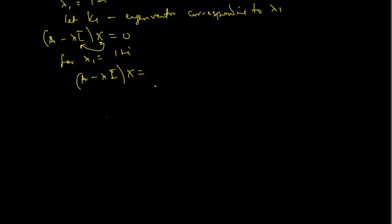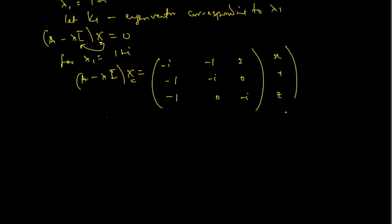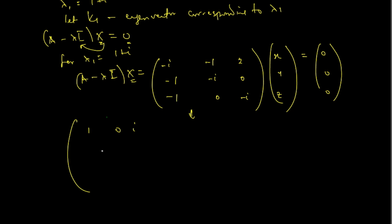Substituting lambda equals 1 plus i, the coefficient matrix becomes: negative i, negative 1, 2 in the first row; negative 1, negative i, 0 in the second row; and negative 1, 0, negative i in the third row. We have a system of linear equations, so we row reduce this coefficient matrix. After row reduction, what we obtain is: 1, 0, i in the first row; 0, 1, negative 1 in the second row; and 0, 0, 0 in the third row. With x, y, z equals 0, 0, 0.